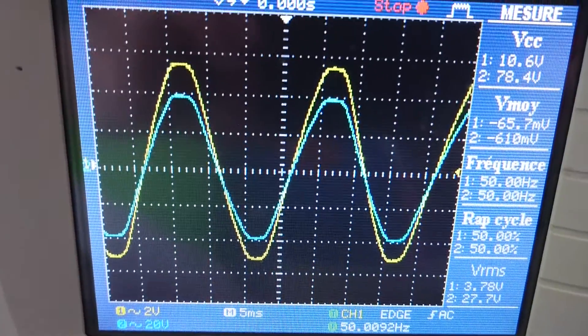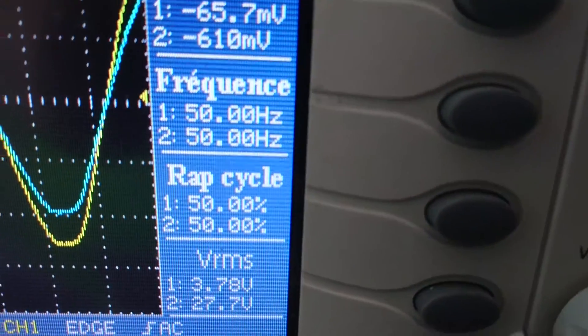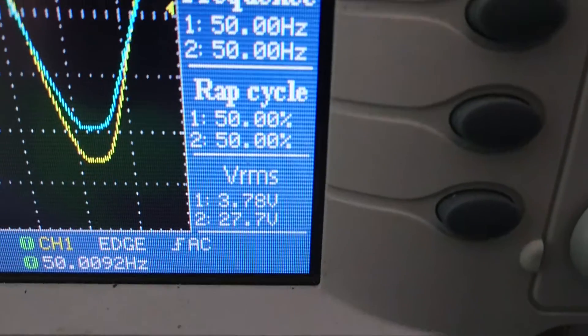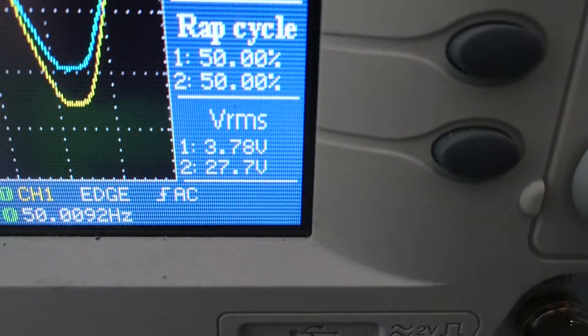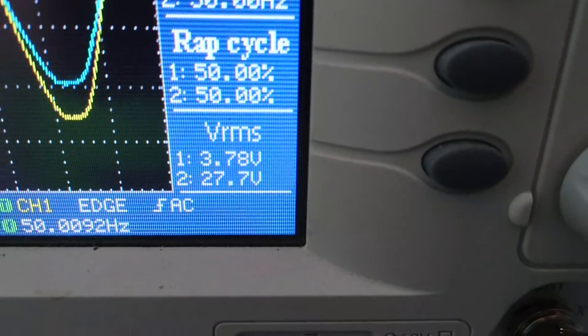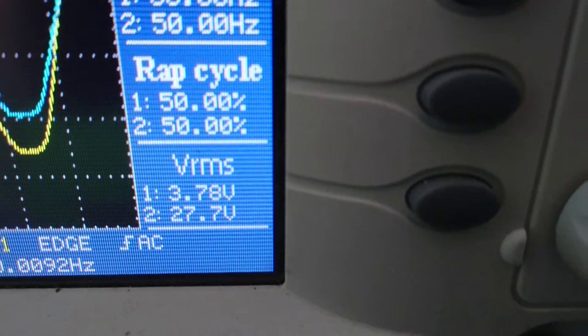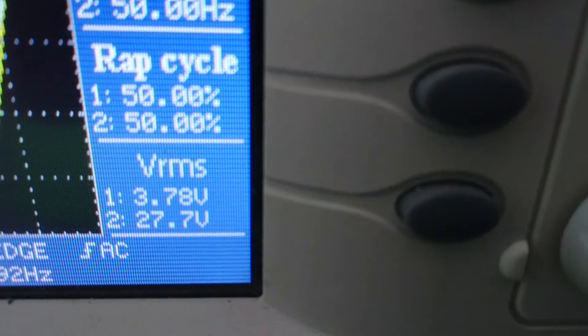As you can see here we have 50 hertz, quite normal in my country. The voltage RMS on channel one, which is output, is 3.78 volts. On the input it is 27.7 volts RMS, something higher than nominal, but this is normal.